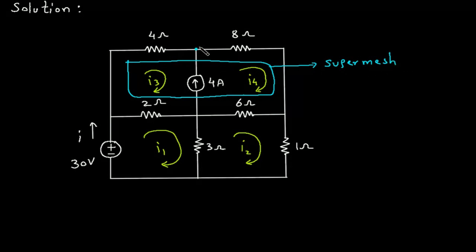Let's say this is node number 1. This current is entering here, so this is I3, and this current here is I4.